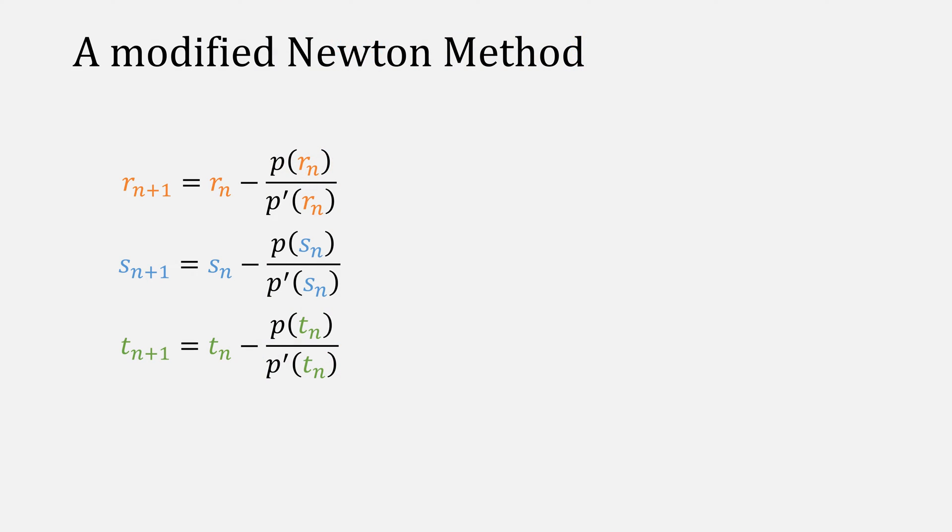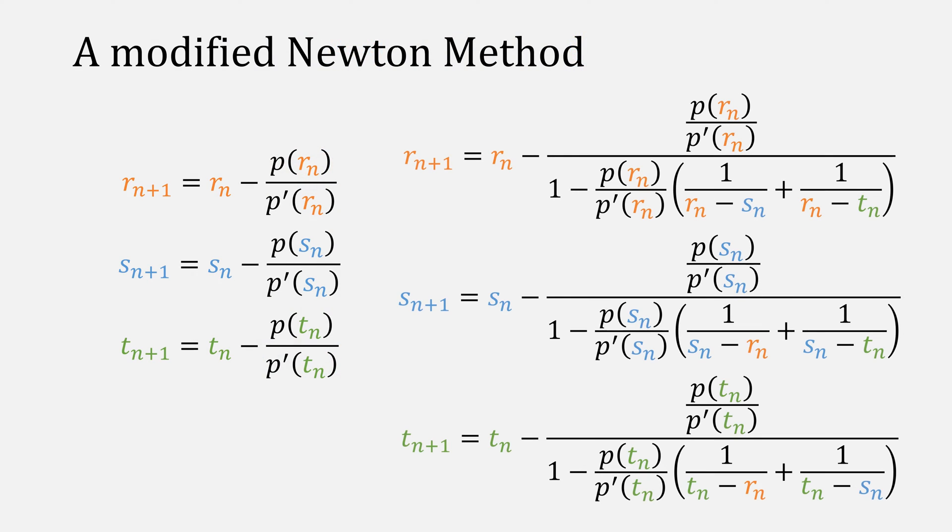Ehrlich proposed a modified Newton's method, something that looks like this, where each equation essentially knows what the others are doing. Let's take a closer look at where this comes from.